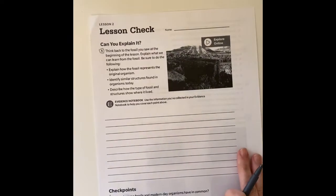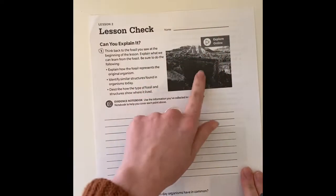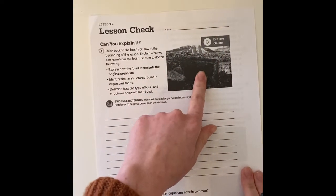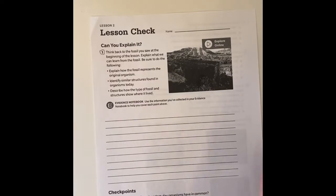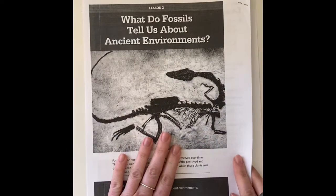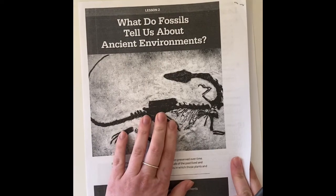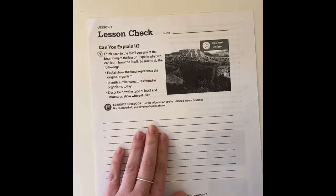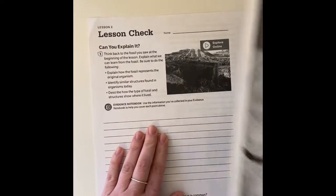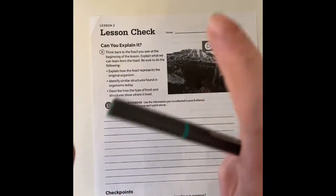All right, so let's get started. Number one says think back to the fossil you saw at the beginning of the lesson. They show this picture, but I don't know if that's the fossil they're talking about. This is the fossil that was at the beginning of the lesson — this creature. So this is the picture I'm going to be referring to when I answer number one, when they say the fossil at the beginning of the lesson.